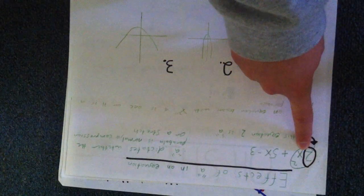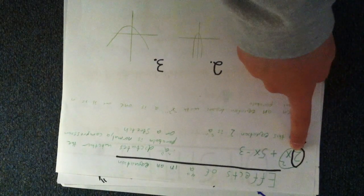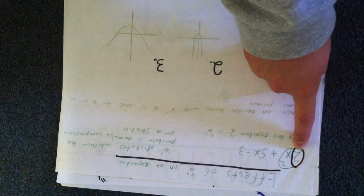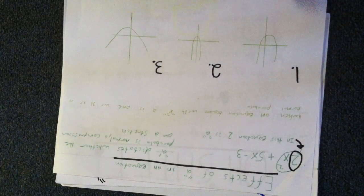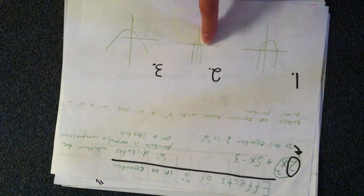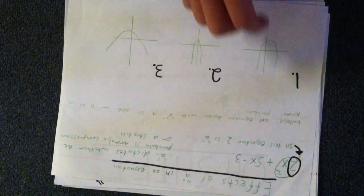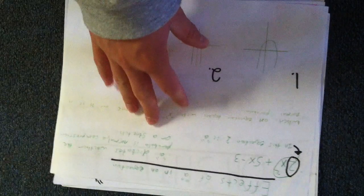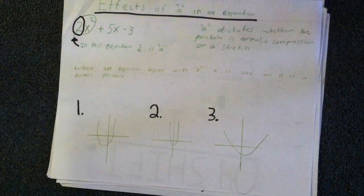The effects of A. In an equation, A is always your first number, like this guy right here. A dictates whether your parabola will be normal, stretched, or compressed. And if A happens to be negative, you flip your parabola upside down.